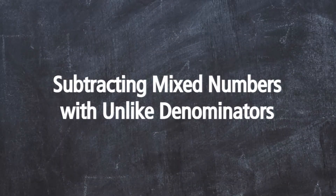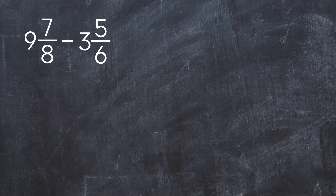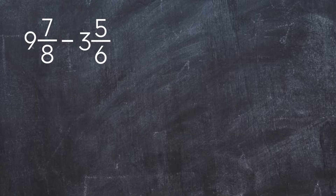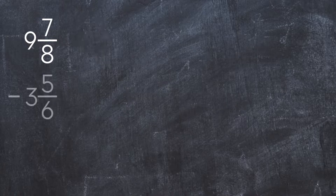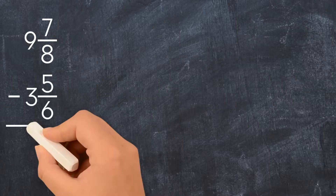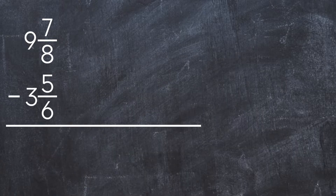Subtracting mixed numbers with unlike denominators. Let's try an example: 9 and 7 eighths minus 3 and 5 sixths. Let's set this problem vertically. We line up the fractions and the whole numbers. This is called stacked form.